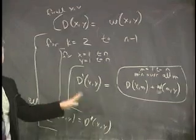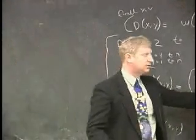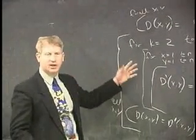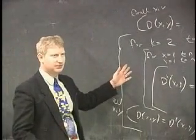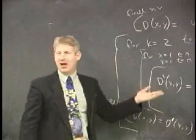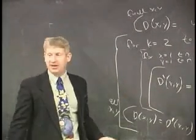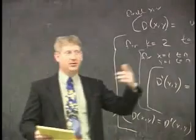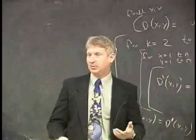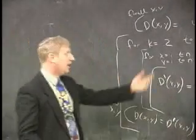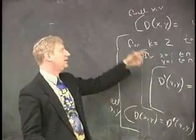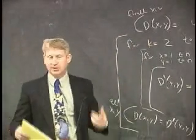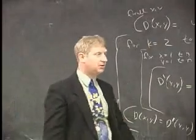Before we do an example, how long does this algorithm take? It's got four loops — K, X, Y, and M — all nested inside each other, each going from 1 to N. There's no clever optimization here. M goes 1 to N, X goes 1 to N, Y goes 1 to N, K goes 2 to N minus 1. That's N times N times N times N — it's N to the fourth. No two ways about it.